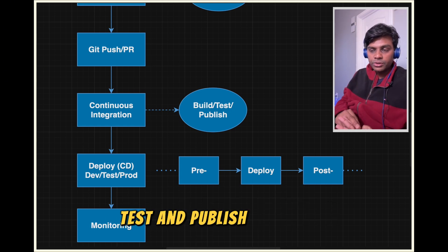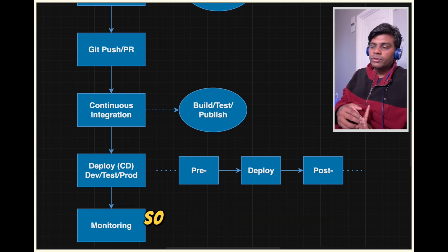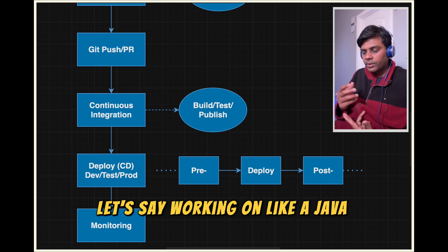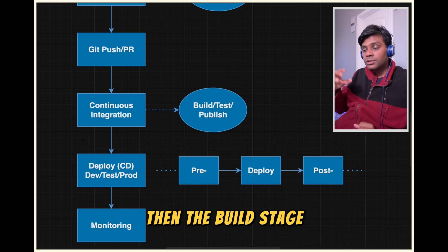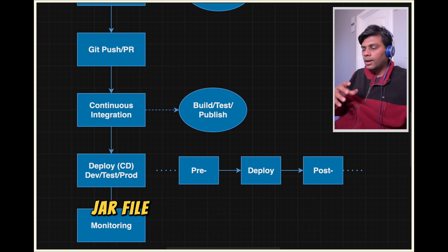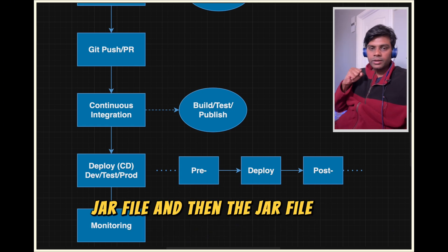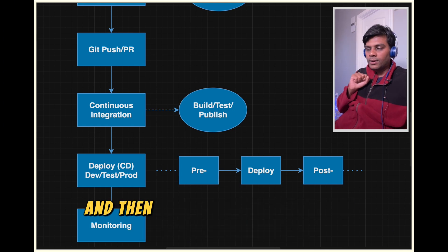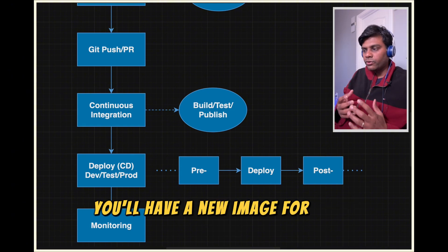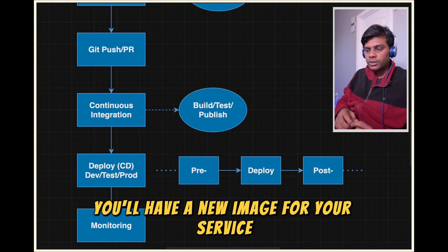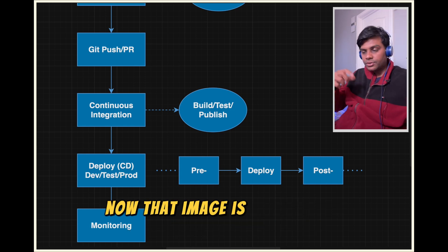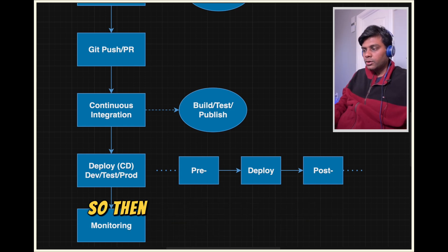The merge actually triggers a Continuous Integration — a CI pipeline — which is going to build, test, and publish your code. For a Java application, the build stage runs Maven commands to create the JAR file. The JAR file then gets containerized, and a new image for your service gets published into your central repository.